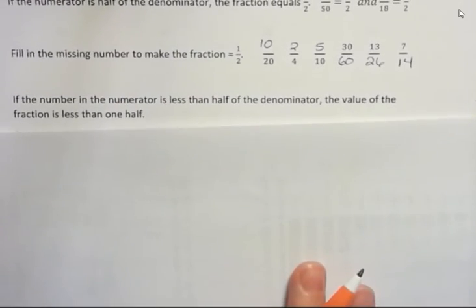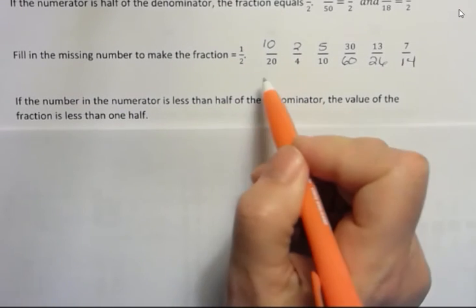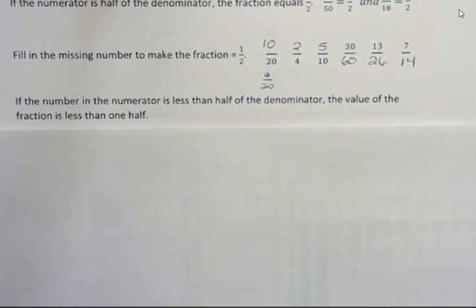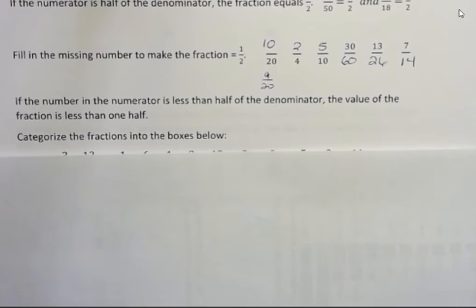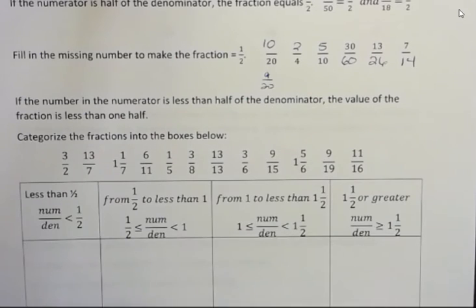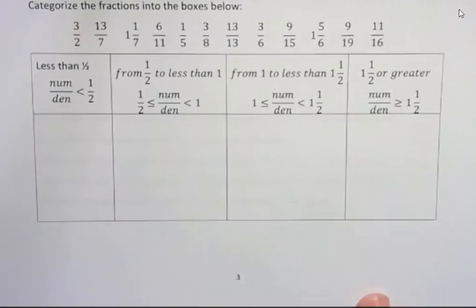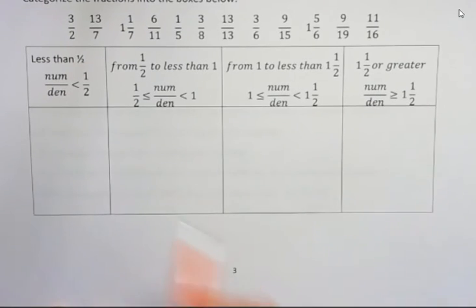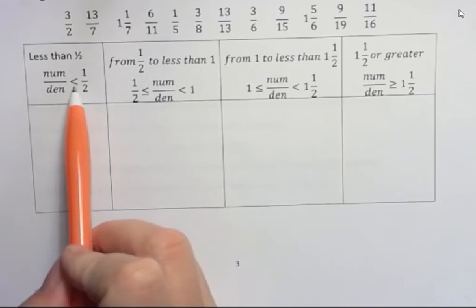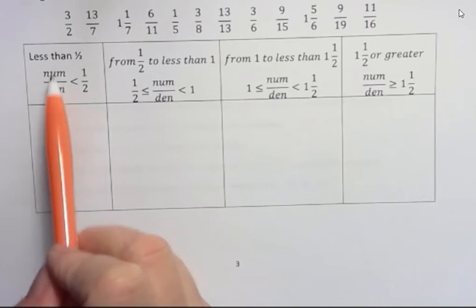If the number in the numerator is less than half the denominator, the value of the fraction is less than 1 half. So for instance, 9 over 20 is definitely less than a half because it's less than half of that number on top. So the last part here says to categorize the fractions into the boxes below. And I have some math terminology going on here that you may not be familiar with. So I set it in words, but I also set it in symbols. In this box goes any fractions where the fraction is less than 1 half.